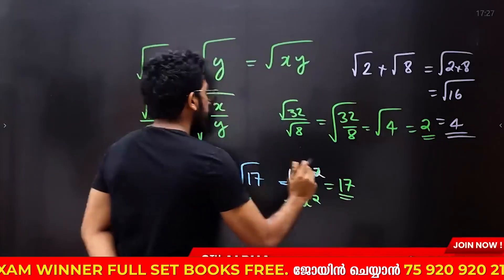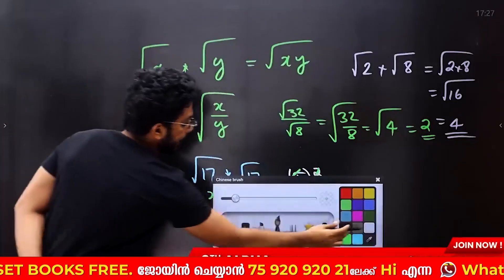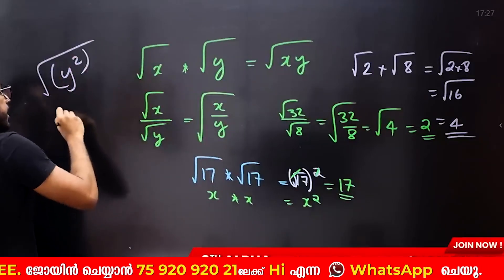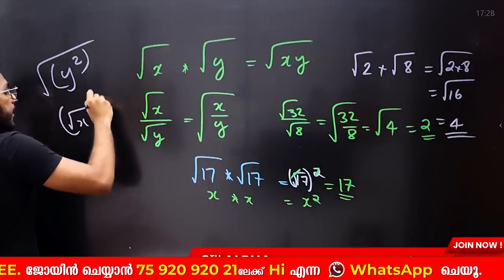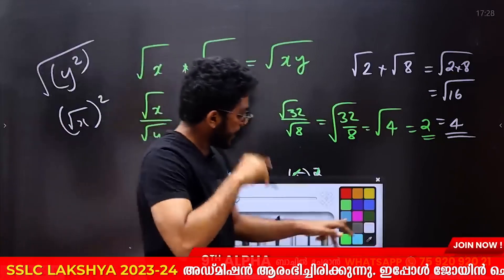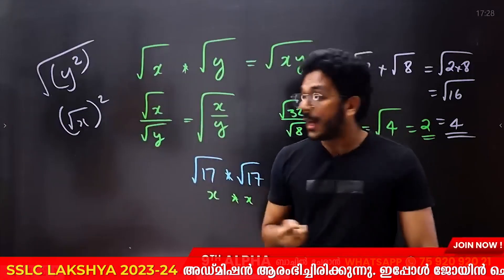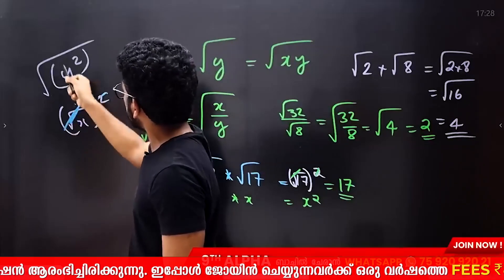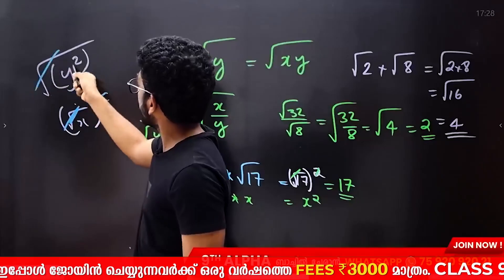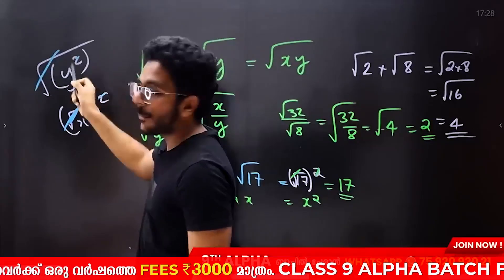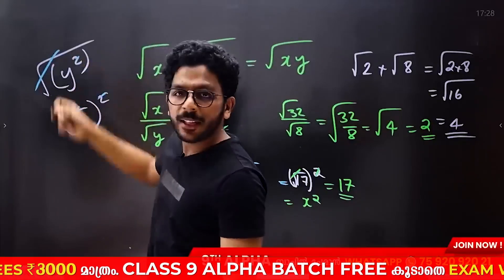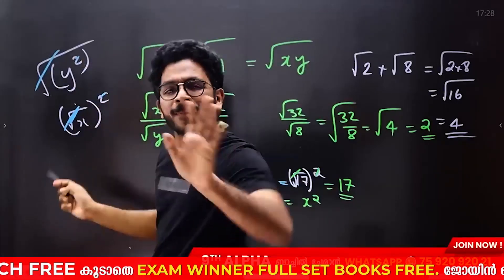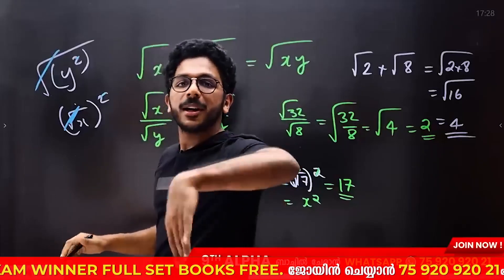The square root of x squared equals x, and root x squared is the same thing. If you have a square root of a square root, it is the same number. The root and square cancel each other out — they are the same number.